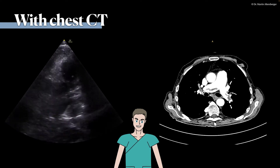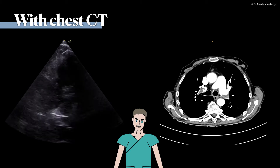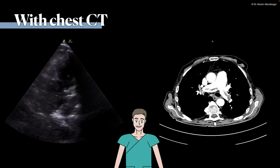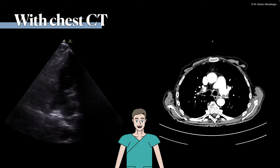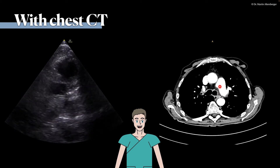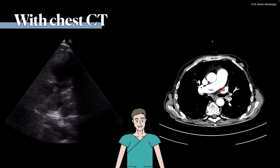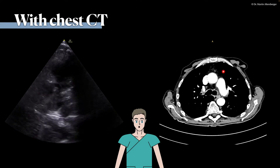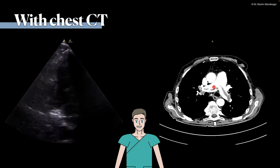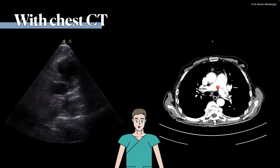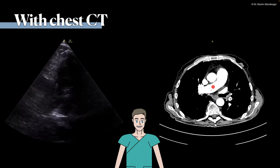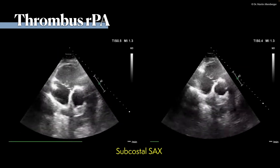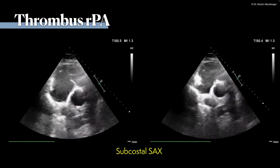Be aware that over-gaining might help, but also be aware it could be a pitfall — you may be over-interpreting a higher gain as a possible thrombus. In this case, it was proven by chest CT that there truly is a central pulmonary embolism. Here we have parts of the aorta, the pulmonic trunk, the right and left pulmonary arteries, and the thrombus.